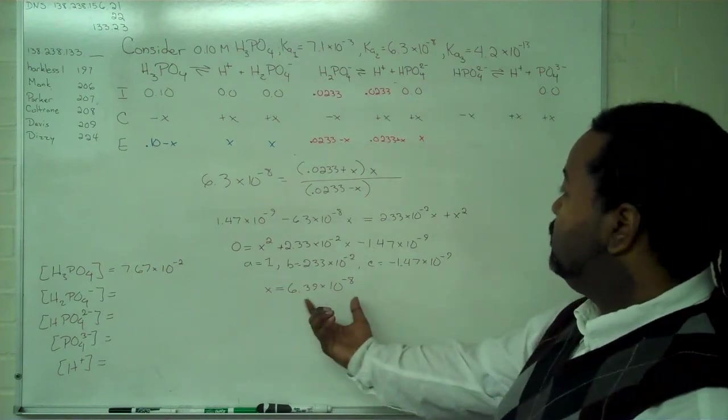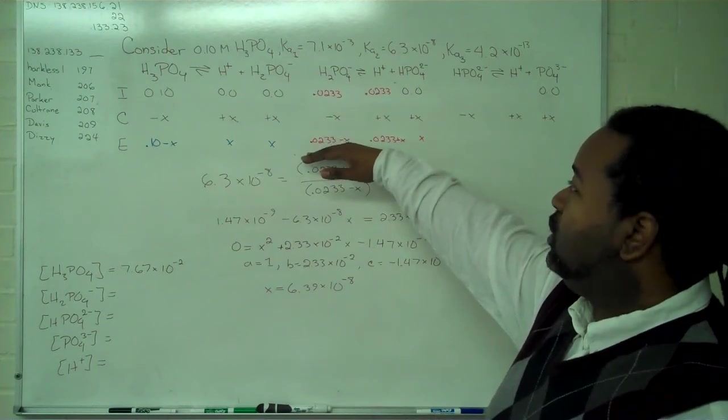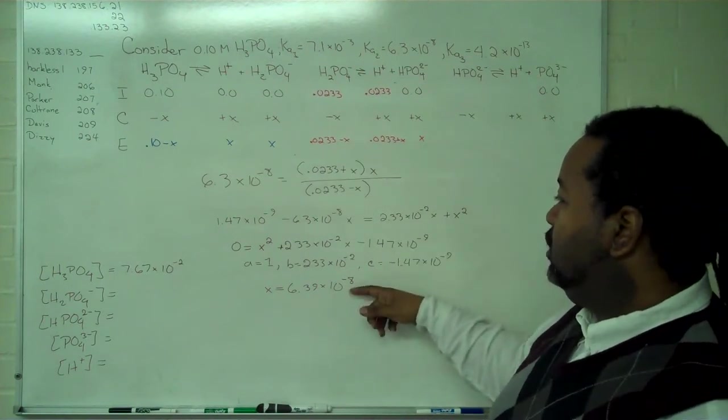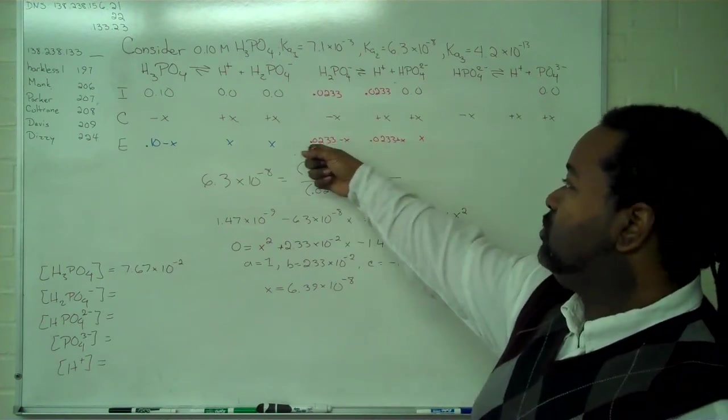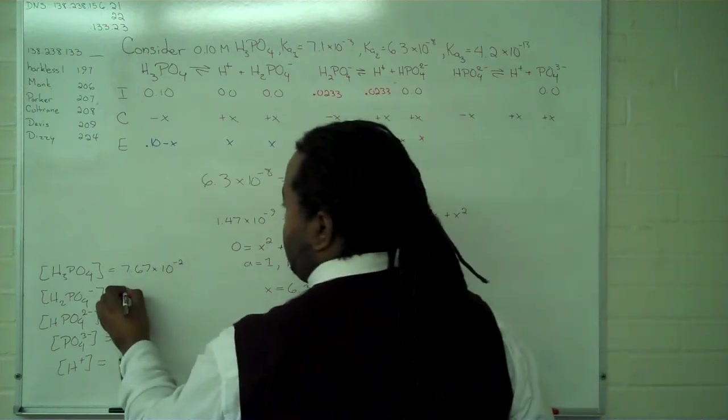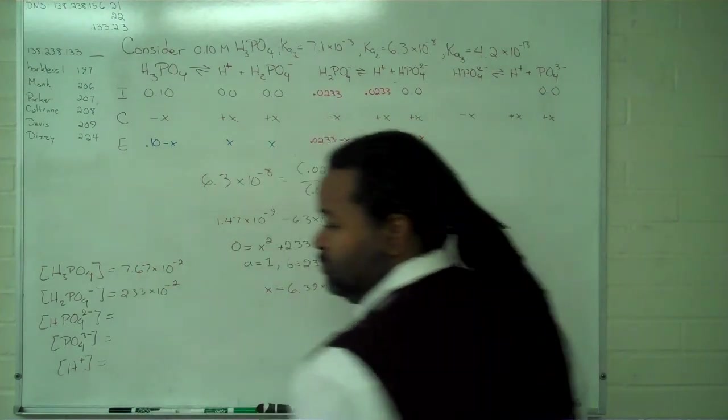So this gives us the ability to determine the value here for our H2PO4-. We note again that this number is very, very small relative to this one. And so it's straightforward then to write in that this is 2.33 times 10 to the negative 2.